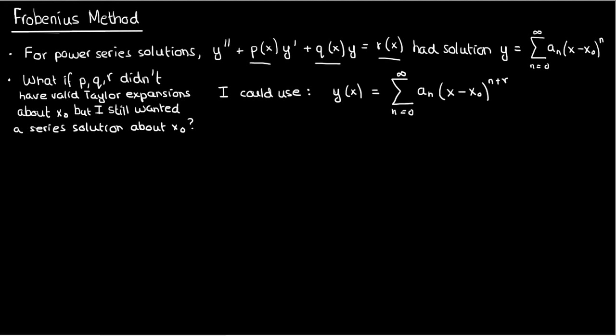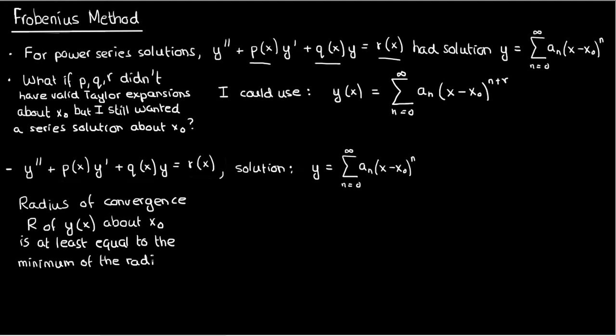But actually though why would I do something like that? Why don't I just save myself the trouble of having an extra r power in there and just use a power series solution around another point where I don't encounter these singularity problems? Well there's a problem with that. If I have an ODE with a regular series solution around x₀, then the radius of convergence R of my solution is at least equal to the minimum of the radii of convergence of the power series corresponding to p, q and r. This result is known as Fuchs' theorem.